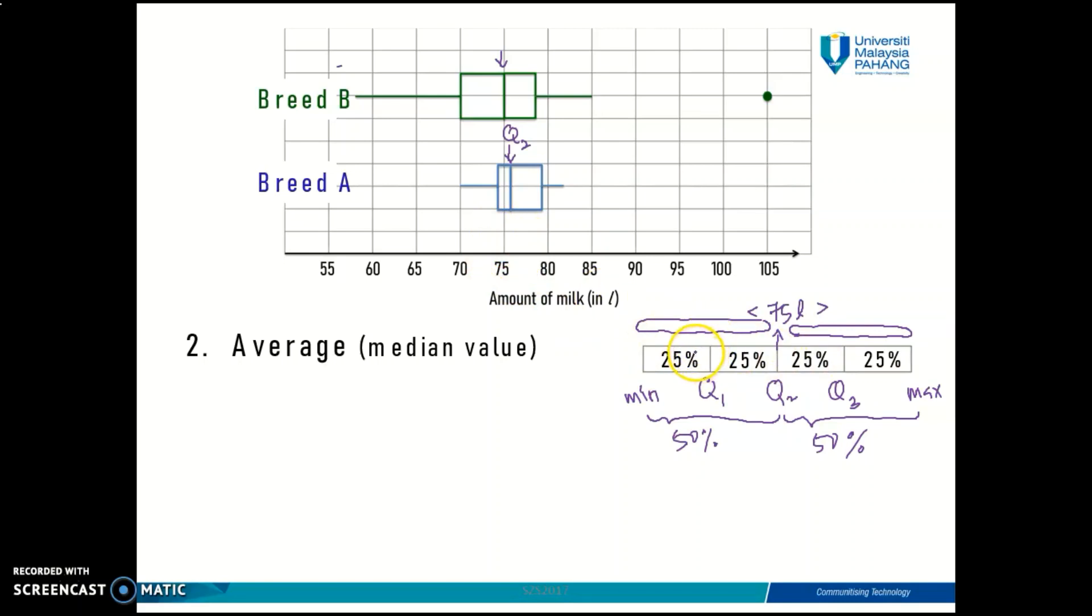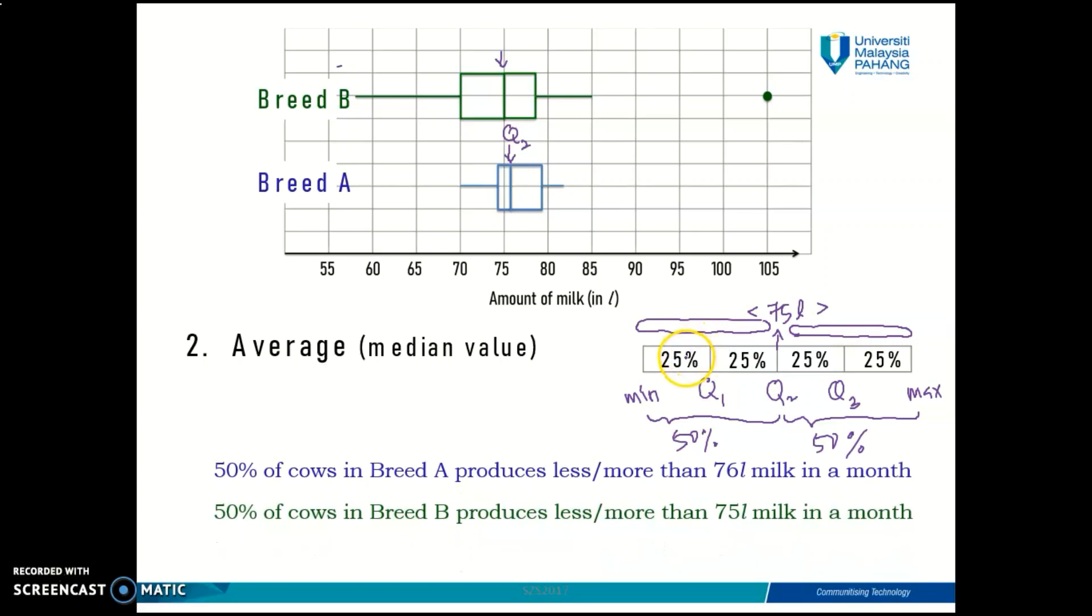Because the median is positioned right in the middle of the data, 50 percent of the data is less than your median value and 50 percent of your data has a value which is greater than your median value.